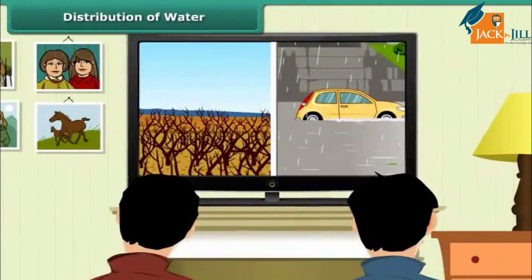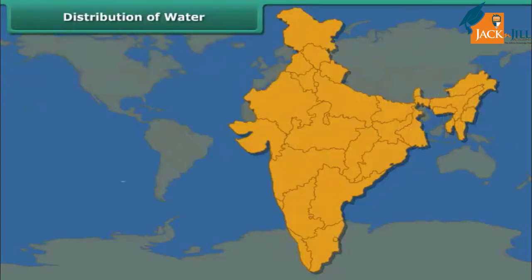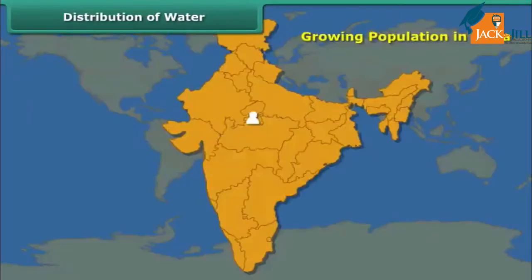Floods are reported in one part of the world while in another part there is a severe drought. The reason for this strange coexistence is the uneven distribution of water across countries of the world. Even within a country, water resources are unequally distributed across regions. While there are deserts that receive scanty rainfall, there are humid regions that receive bountiful rainfall. India has 17% of the total world population but only 4% of the world's freshwater resources. As a result, India is facing acute water shortage, and the situation is likely to worsen with population growing at a fast pace.